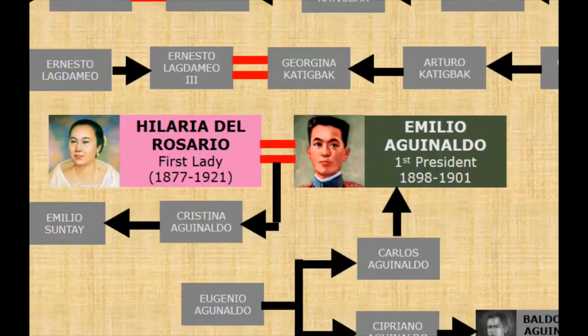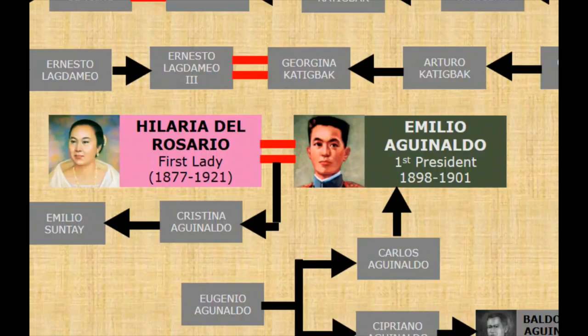Let's begin with Emilio Aguinaldo, the first president of the Philippines. Emilio Aguinaldo served as president from January 23, 1899 to March 23, 1901. His presidency ended with his capture by the Americans on March 23, 1901, in Palanan, Isabela, which effectively dissolved and ended the First Republic of the Philippines. His first wife was Hilaria del Rosario, who is considered today as the first First Lady of the land.